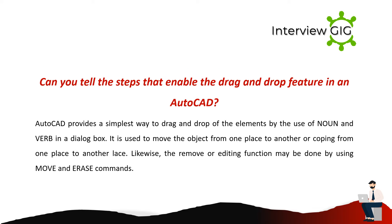Can you tell the steps that enable the drag and drop feature in AutoCAD? AutoCAD provides the simplest way to drag and drop elements by the use of noun and verb in a dialog box. It is used to move an object from one place to another, or copy from one place to another. Likewise, the remove or editing function may be done by using move or erase commands.